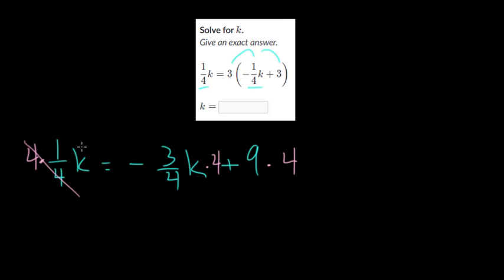And so 4 divided by 4, that's just 1. So you get 1k, or just k. Over here, 4 divided by 4, those cancel. And you just get -3k. And then 9 times 4 is 36.